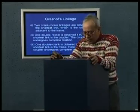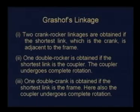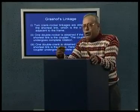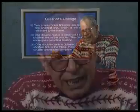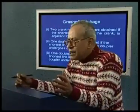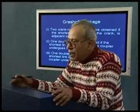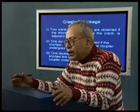If we make another kinematic inversion from the same Grashof chain, we can get a double crank. A double crank linkage is obtained if the shortest link is the frame. Because all other three links can rotate completely with respect to the shortest link — since it is relative motion that matters — if the shortest link is held fixed, then all other three links can make complete rotation. So we get a double crank, and even the coupler is capable of making complete rotation.